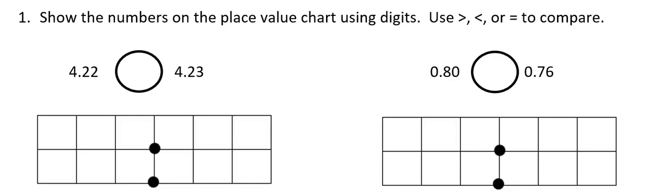This tutorial is for 5th grade, module 1, lesson 6. In this lesson, we're going to compare decimal numbers, whether they're written in decimal form, fraction form, or word form.